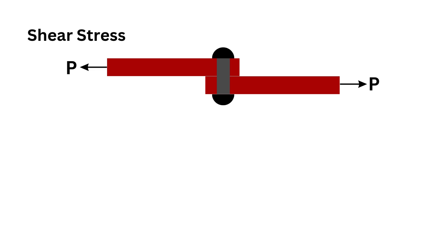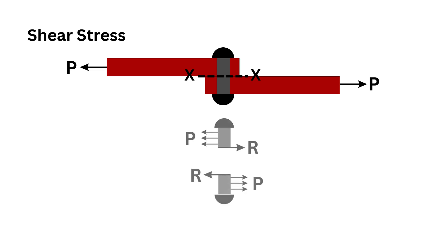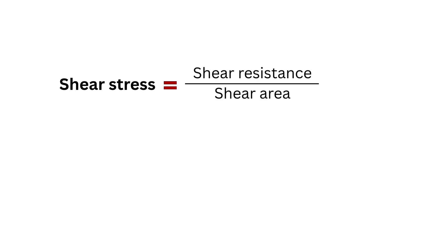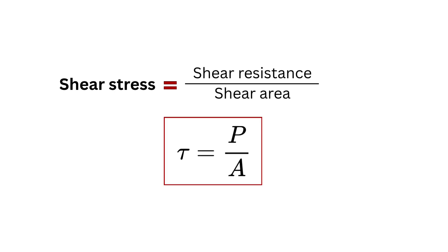Shear stress is induced in a body when subjected to two equal and opposite forces acting tangentially across the resisting section. Considering a section XX which divides the rivet into two parts, each part will be in equilibrium if the applied force equals resistance. Shear stress equals shear resistance divided by shear area, and since shear resistance equals applied force, shear stress equals applied force divided by shear area.